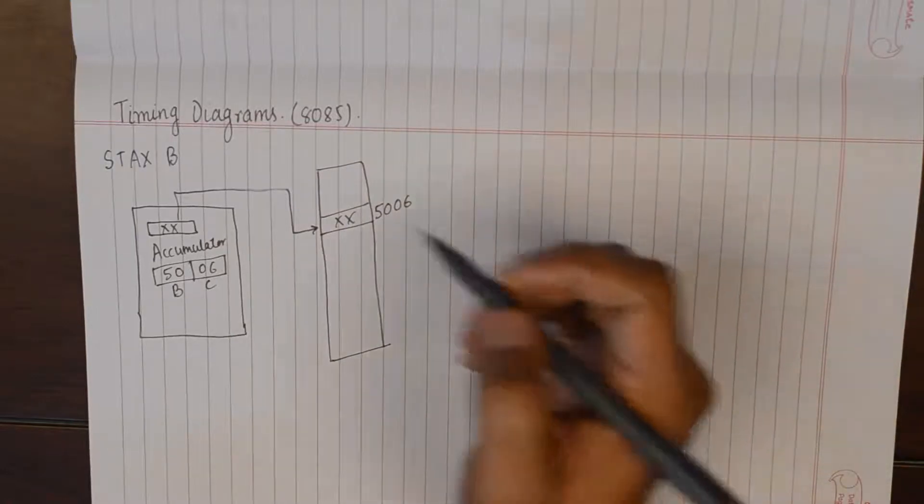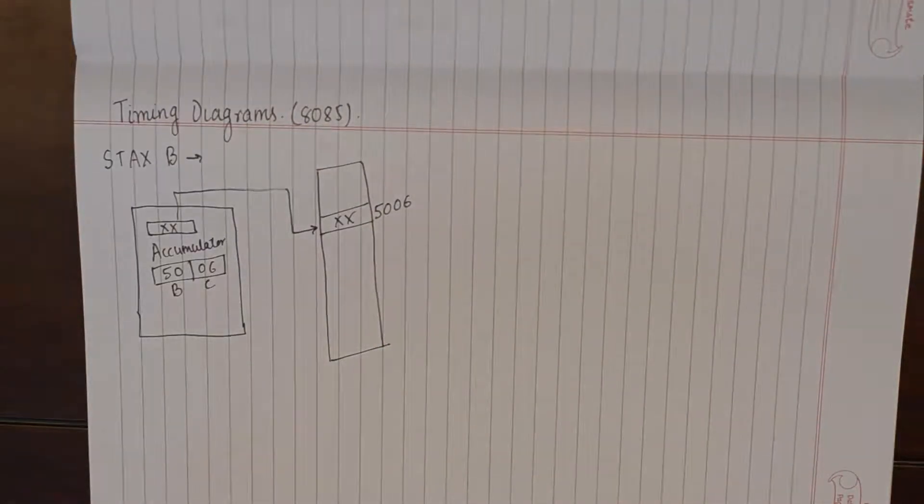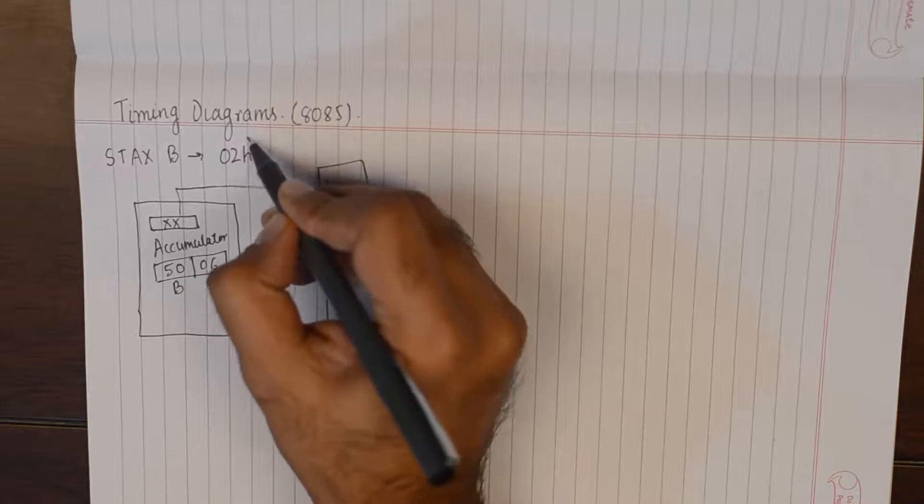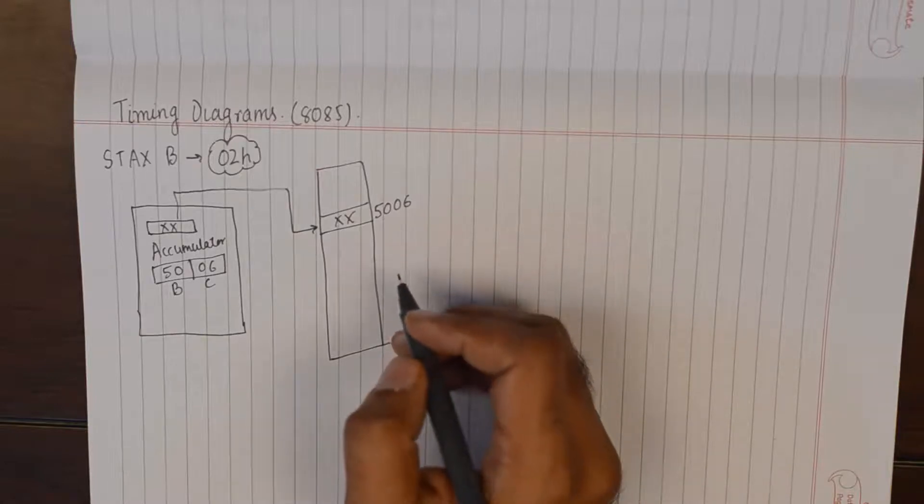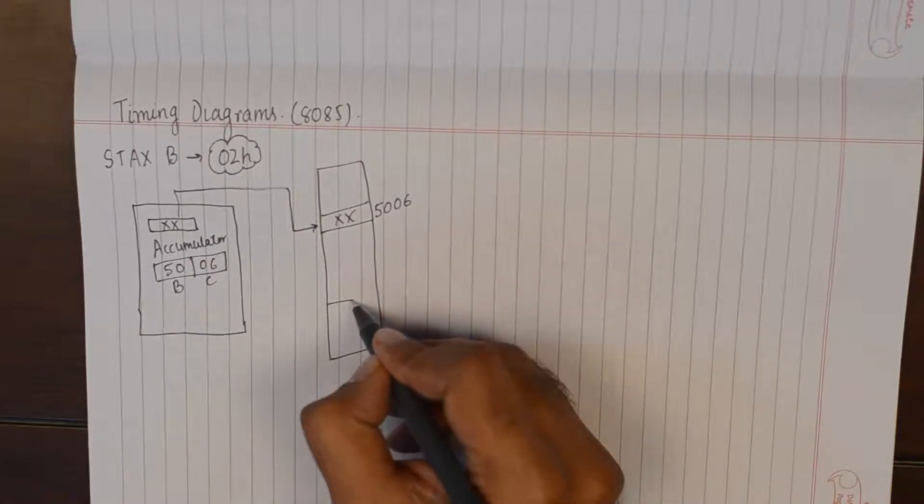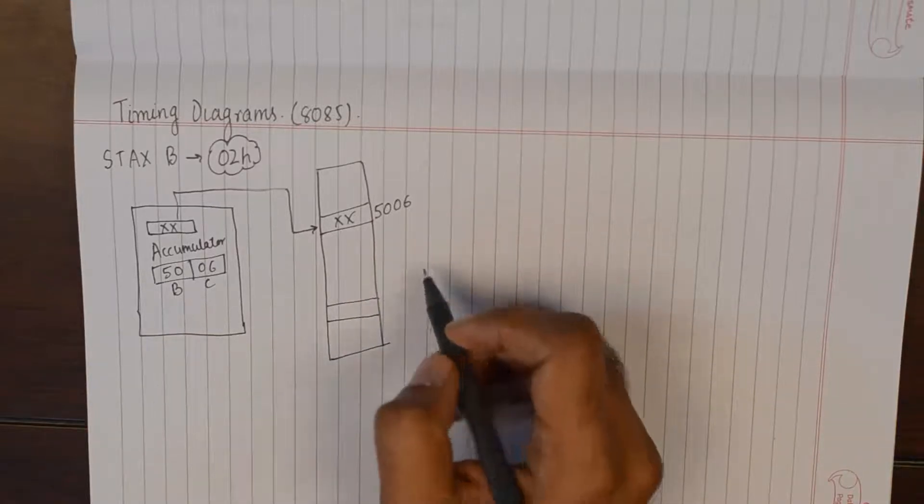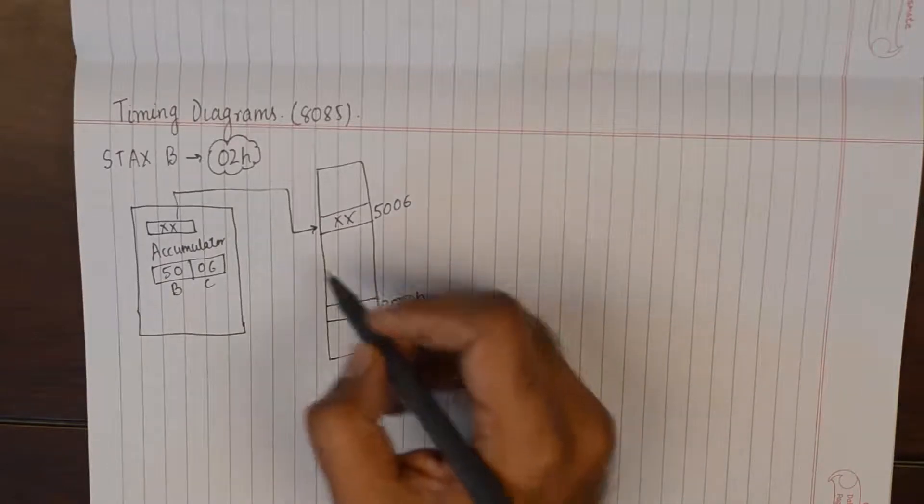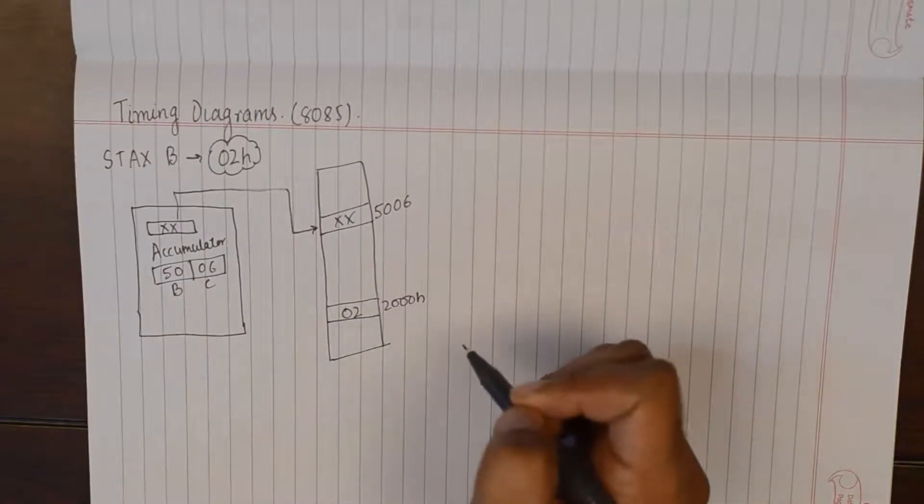Now STAX B itself is a one byte instruction and the hexadecimal code for STAX B is 02. So if this instruction was to be executed we'll need to write this instruction in some memory location and we take up the classical example of the memory location 2000H and we'll write this instruction in the memory location 2000H.